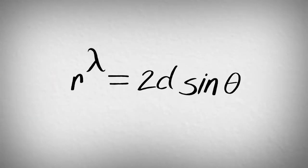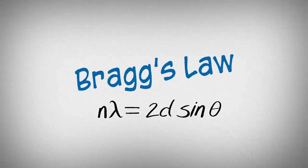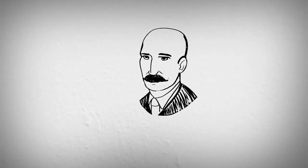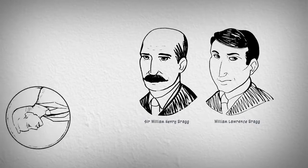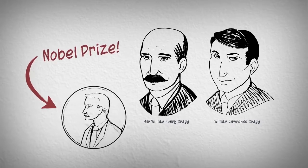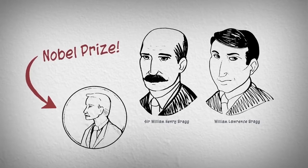Rearranging this equation yields an equation commonly known as Bragg's Law, named after Sir William Henry and William Lawrence Bragg, the father-son team who won the Nobel Prize in 1915 for their work analyzing crystal structures with X-ray diffraction.